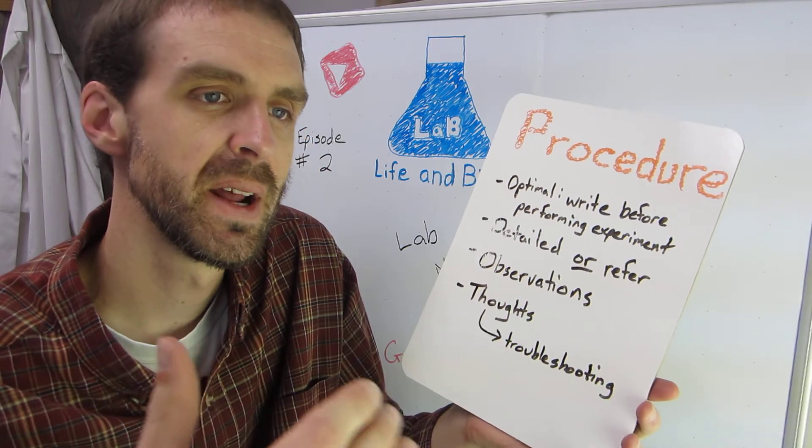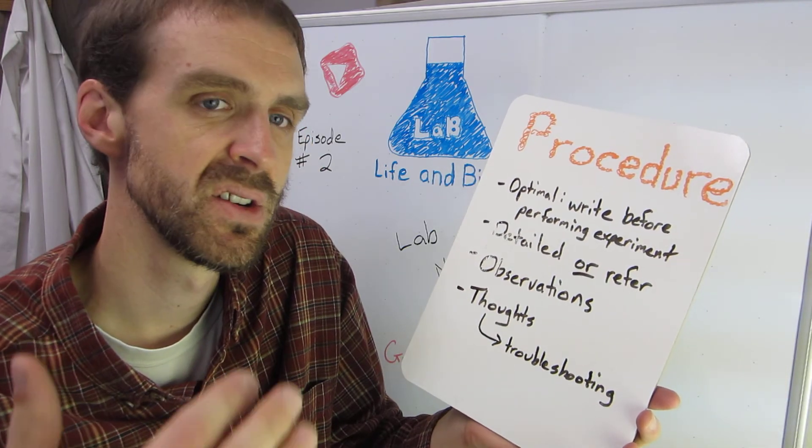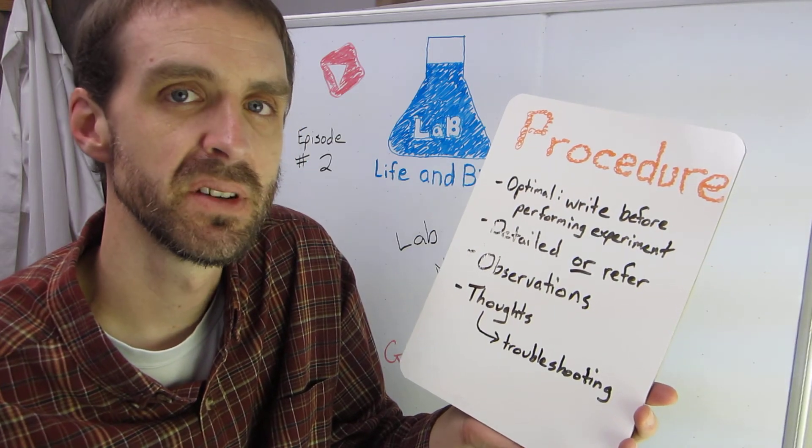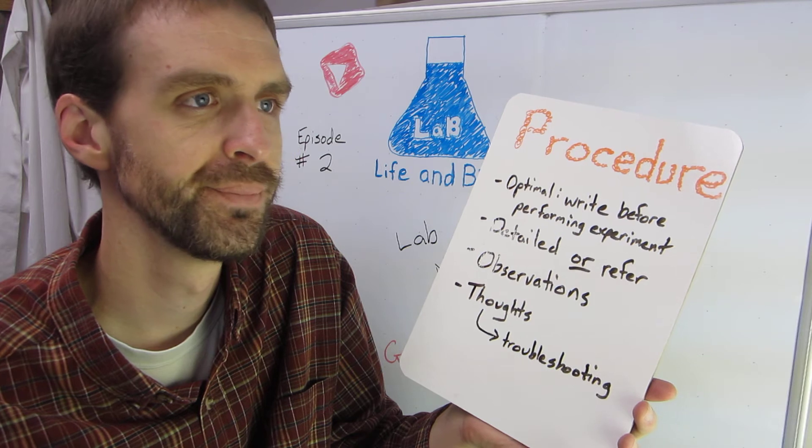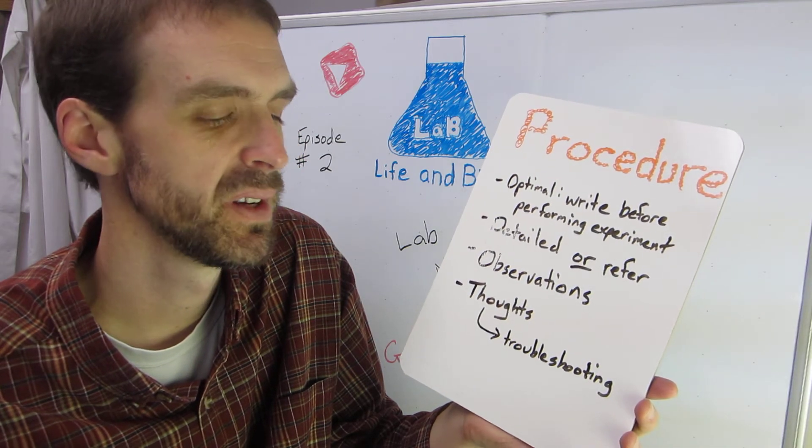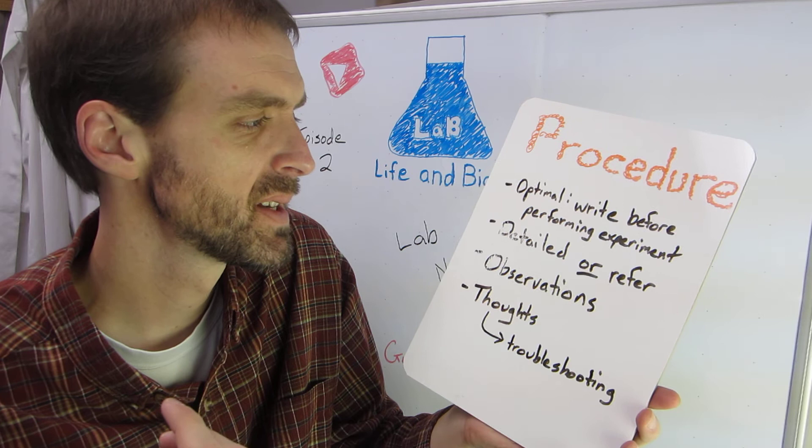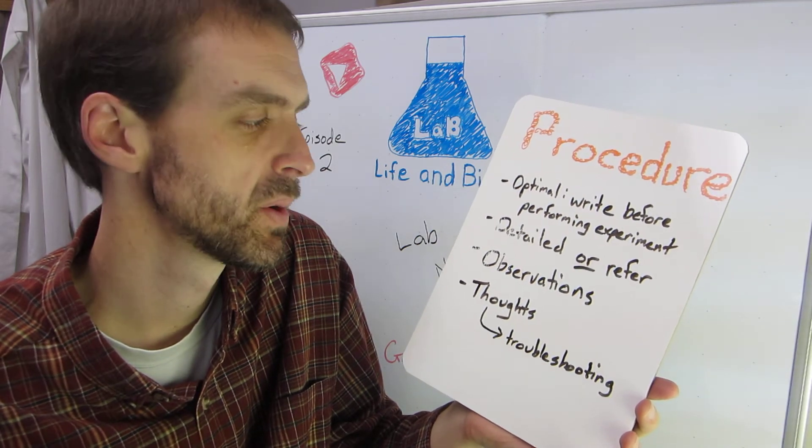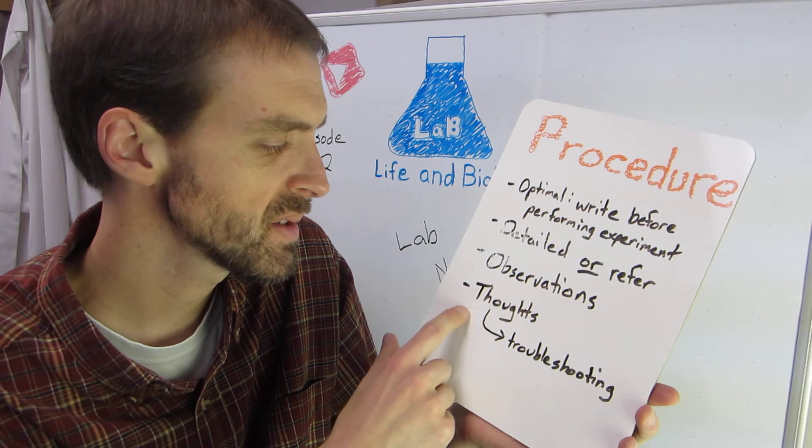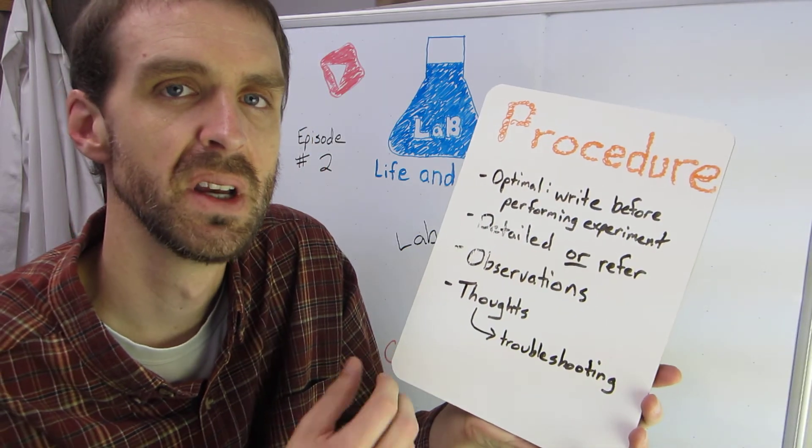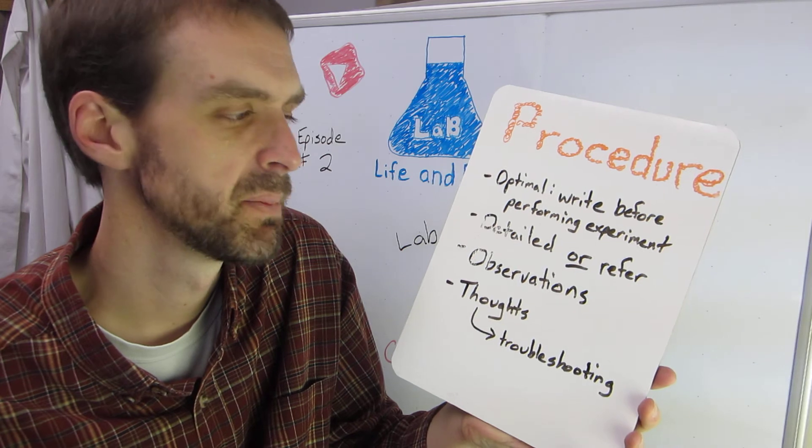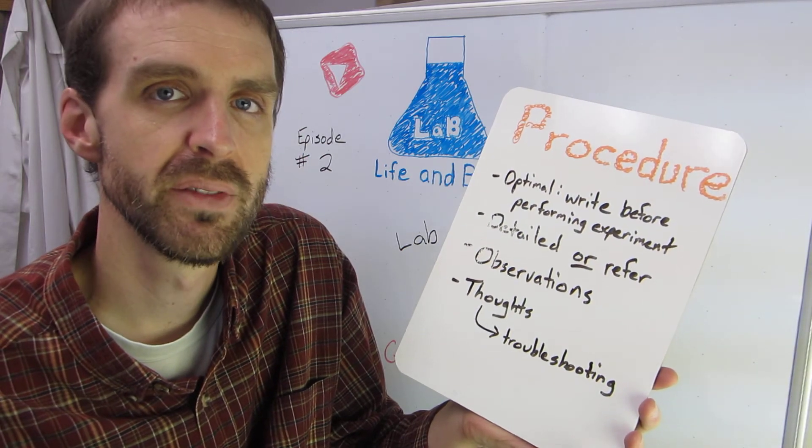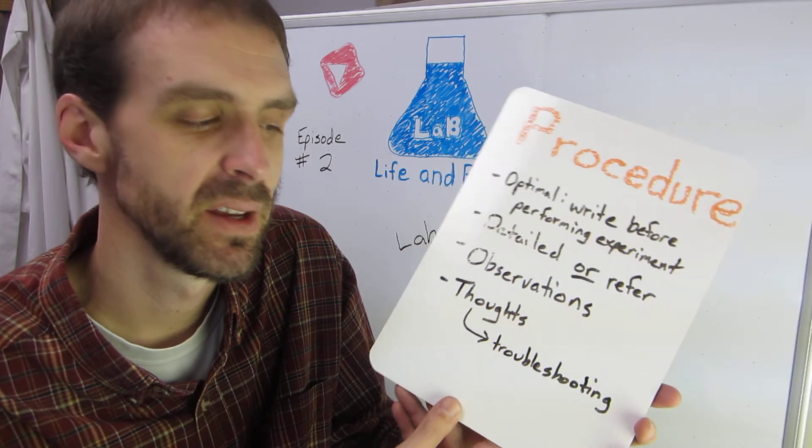Observations. So you write up your procedure ahead of time. But then as you're doing the experiment, something might happen. You might spill your sample. You might not see a pellet after a centrifuge step. Things like that. You should make note of these. And you should also write down thoughts, troubleshooting. If there's parts of the experiment that don't seem to go well and you think you should change them next time, make a note of it there and then you're going to come back to that in your conclusion.